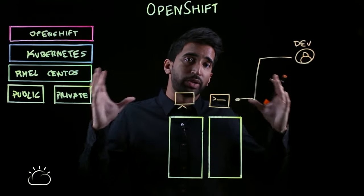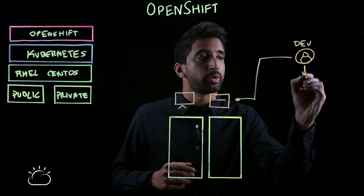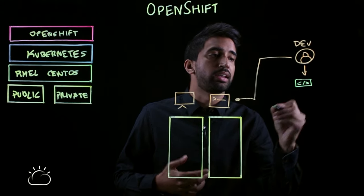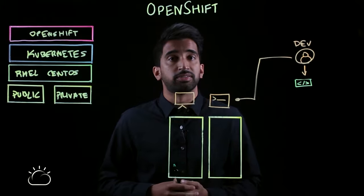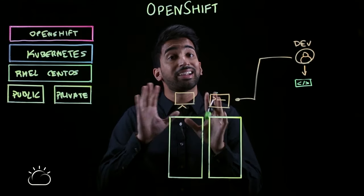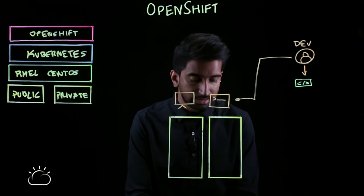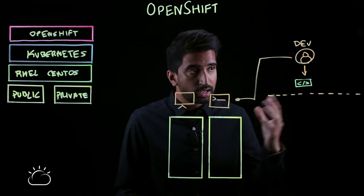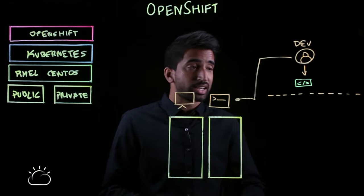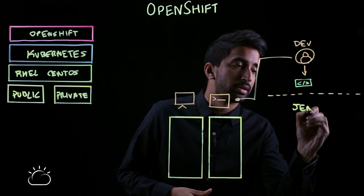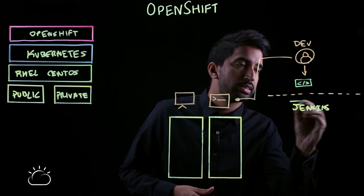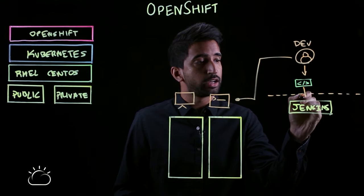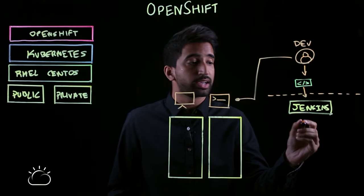Once they get into their flow of creating updates to an application, the very first step they're going to want to do is push changes to a repository. Let's use GitHub as an example. The developer makes changes into GitHub — that's really all they need to do. Behind the scenes, OpenShift is going to take care of the rest. When that application and project was created, OpenShift in the backend will create a Jenkins job and pipeline that helps power deploying this application. Once code gets pushed into GitHub, it'll trigger a webhook, which kicks off a Jenkins job.